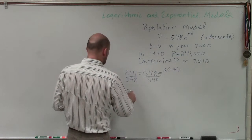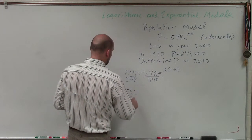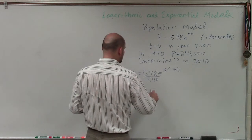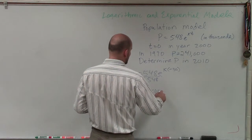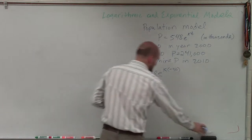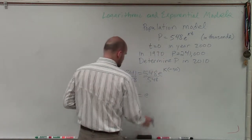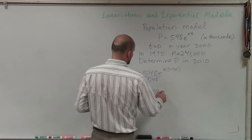So therefore, I have 241 divided by 548 equals e to the k times negative 30. We can just rewrite that, if you like, as negative 30k.